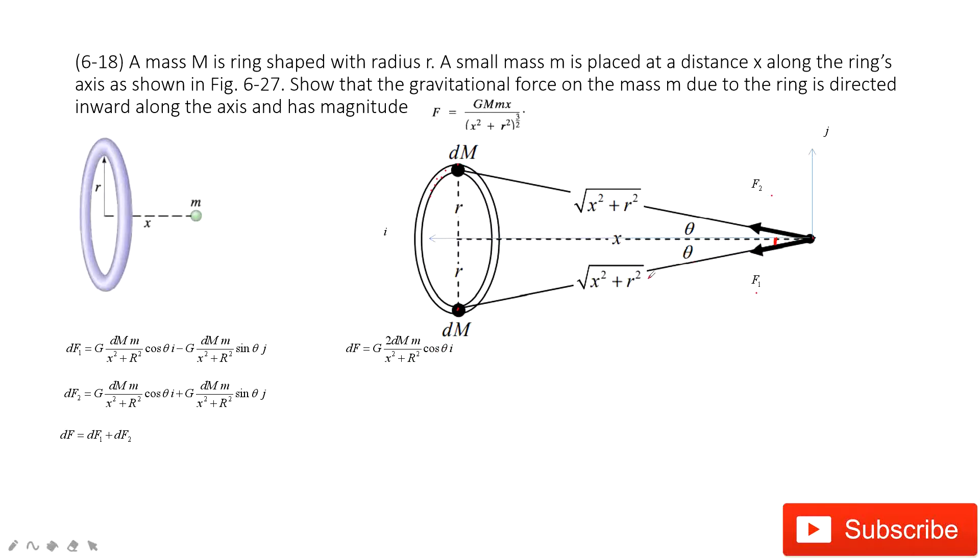Now can you find the cosine theta? Sure. Cosine theta is this side x divided by this distance, and the distance squared is x squared plus r squared. And then how can you solve this problem?